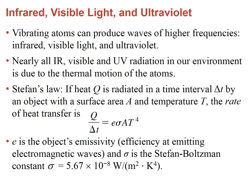There is another type of radiation produced when atoms vibrate. Because atoms are so small, they vibrate very rapidly and can produce waves with high frequencies such as infrared, visible light, and ultraviolet. Infrared is produced by the motion of molecules in our cells — we irradiate in the infrared. All infrared, visible, and UV radiation is due to the motion of atoms.